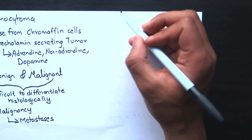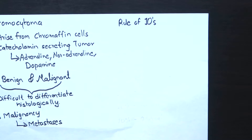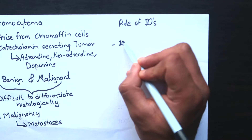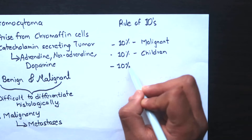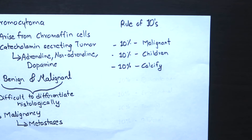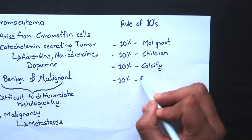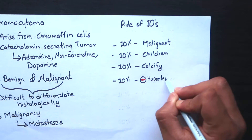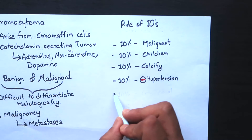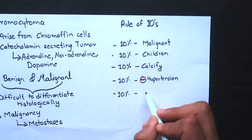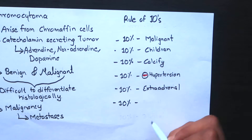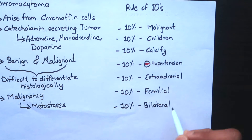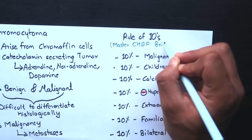Something called the Rule of 10 can be applied in pheochromocytoma for better understanding of the tumor. 10% of cases are malignant; 10% occur in children; 10% of tumors calcify; 10% are not associated with hypertension, meaning 90% of people with pheochromocytoma have hypertension; 10% are extra-adrenal, found in organs other than the adrenal gland such as the organ of Zuckerkandl and bladder; 10% are familial cases; and 10% are bilateral, occurring in both adrenal glands. You can remember these using the mnemonic 'Master Chef Britain'.